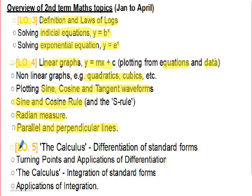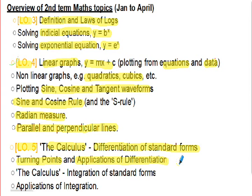The final topic in lessons was outcome five: calculus. That's differentiation of standard forms using standard tables — ax^n formats, cos(ax), sin(ax) functions. An application of differentiation that sometimes crops up is turning points — finding maxima and minima. Another application: given a distance–time equation, we differentiate to find velocity–time, then differentiate again to find acceleration–time.